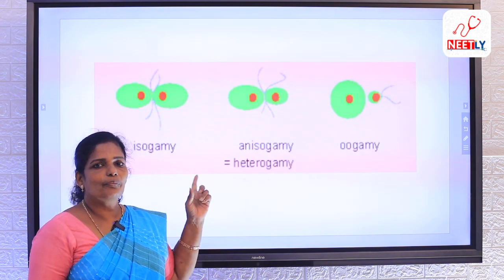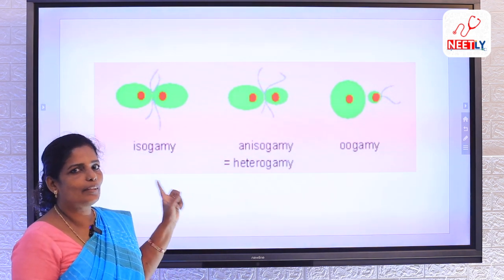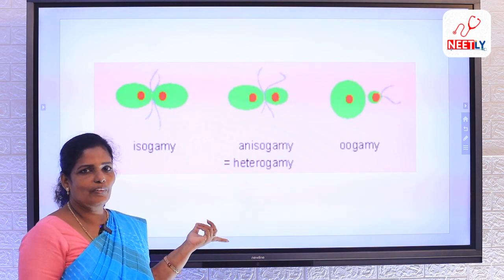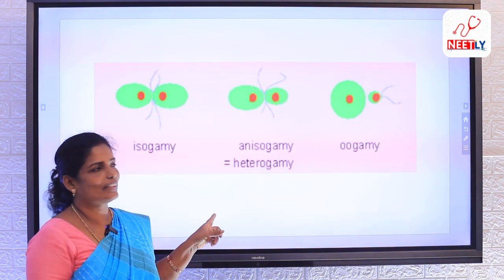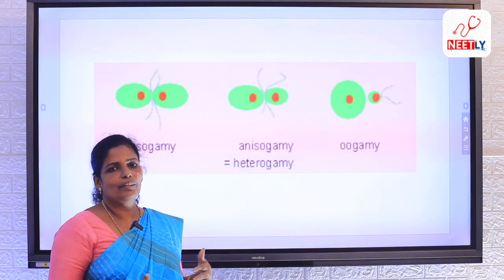Here, the fusing gametes will be similar both morphologically as well as physiologically. In anisogamete, fusion of dissimilar gametes occurs.